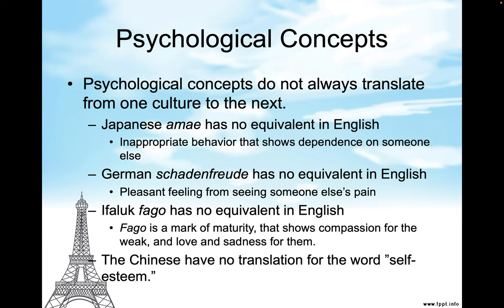The German word 'schadenfreude' has no equivalent in English — it's a pleasant feeling you get when you see someone else's pain. The Ifaluk word 'fago' has no equivalent in English. Fago is a mark of maturity that shows compassion for the weak and love and sadness for them. The Chinese have no translation for the word 'self-esteem' — it doesn't exist in the Chinese concept.